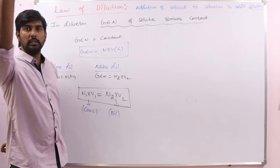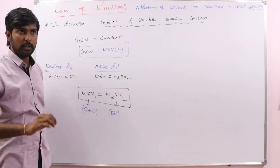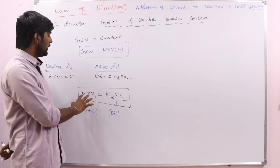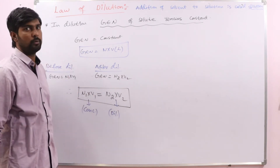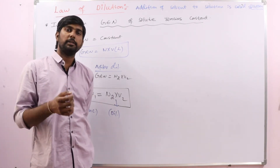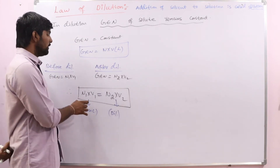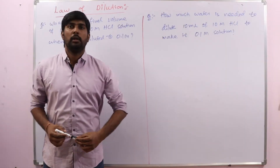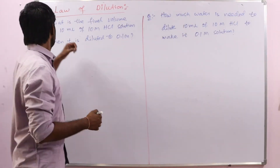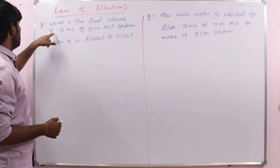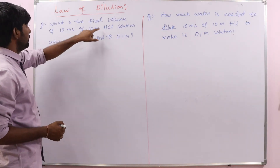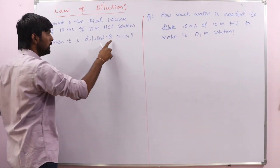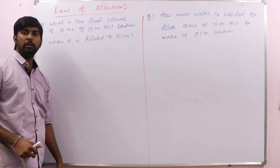When concentration is expressed in molarity, the number of moles of solute is constant, giving us M1V1 = M2V2. Now let us see two problems. Problem 1: What is the final volume of 10 mL of 10 molar HCl solution when it is diluted to 0.1 molar?